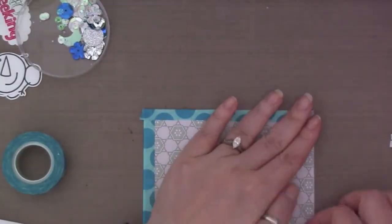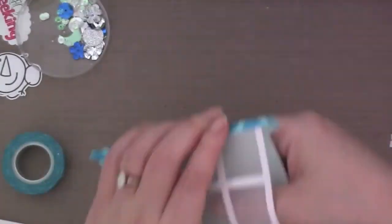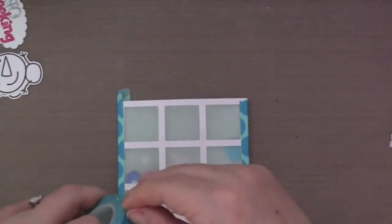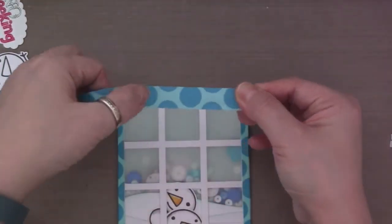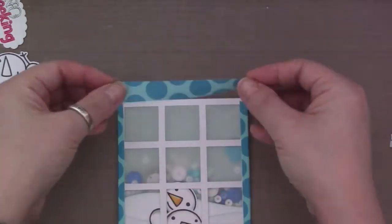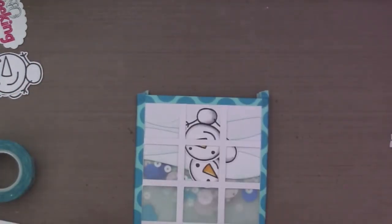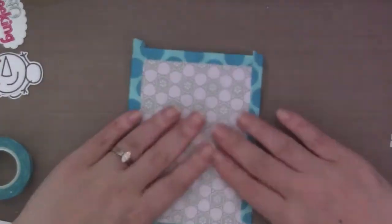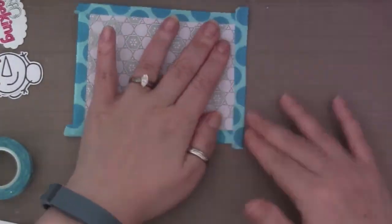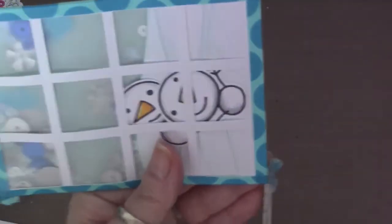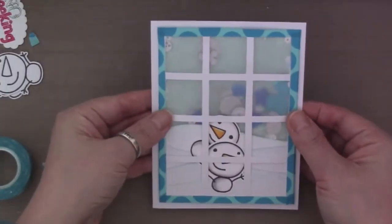So the vellum served two purposes: to mute down the background paper, and also it's going to be my shaker portion as well. And I put in some sequins that I selected. I selected blues and silvers, and I put some big chunk confettis in there as well so you can see it better.